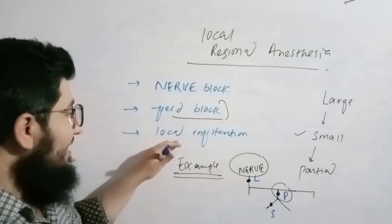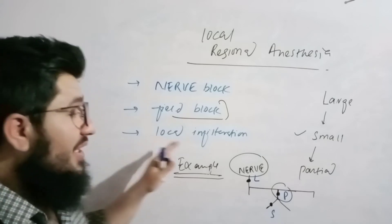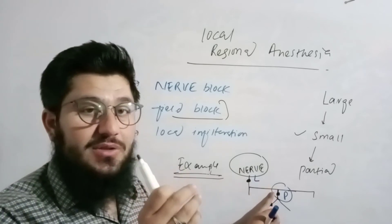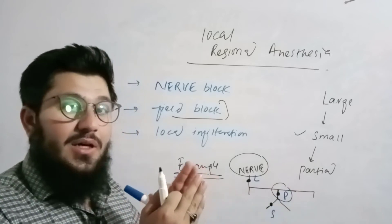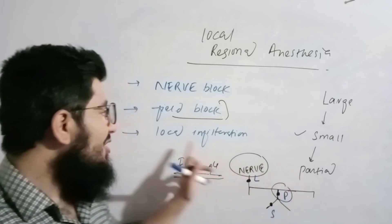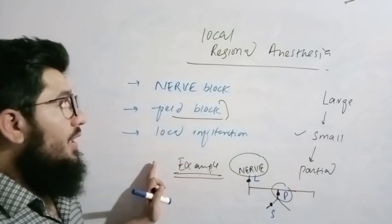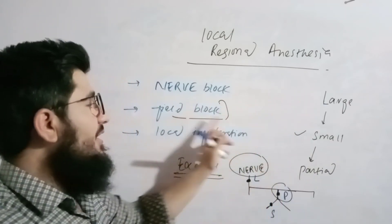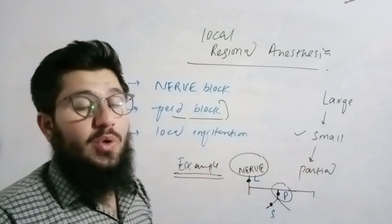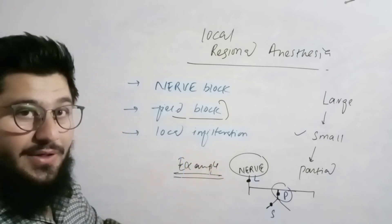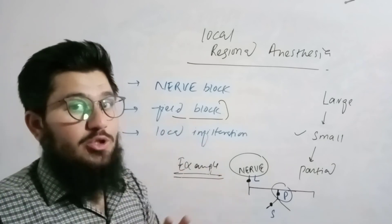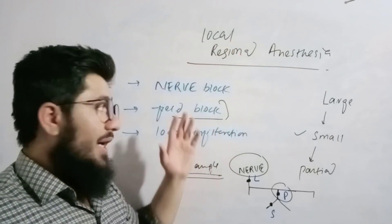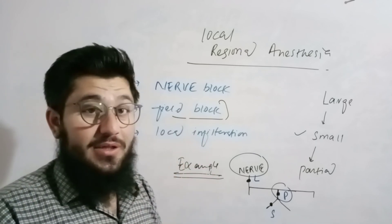If you are blocking a smaller area, there is local infiltration — where you are working on just a partial area of the small portion. So the large portion is the jaw, the small portion is a single tooth, and now if we are working on just one side of that tooth, we do local infiltration. So: nerve block for the large portion like the entire jaw, field block for a small portion like a single tooth, and local infiltration for a partial area of that tooth. All these are anesthesia terms used for local or regional anesthesia. Hope you understood — if there is confusion, drop a message in the inbox.